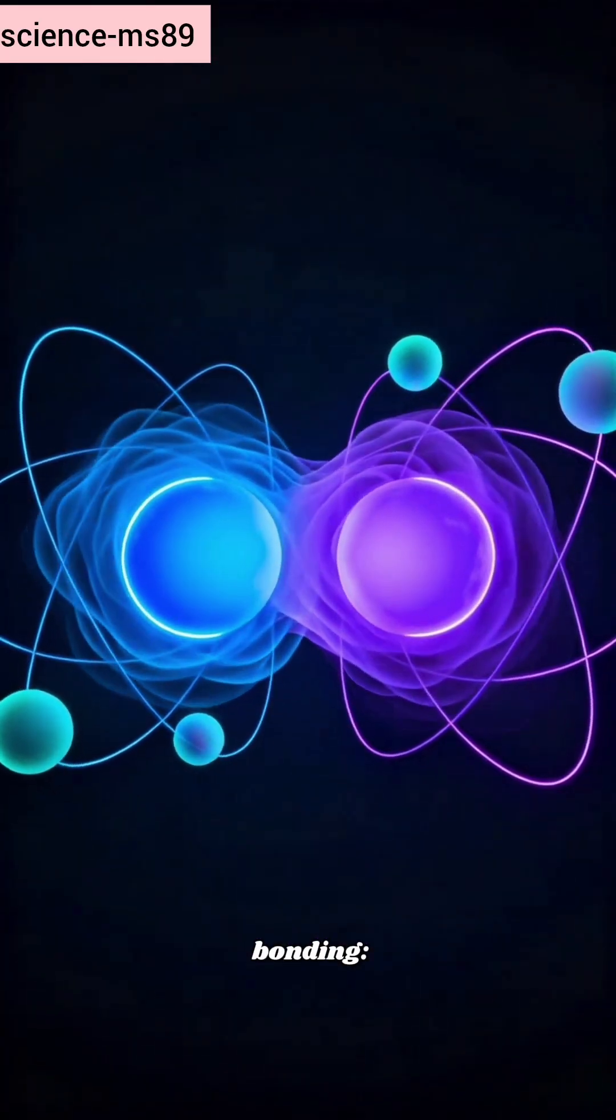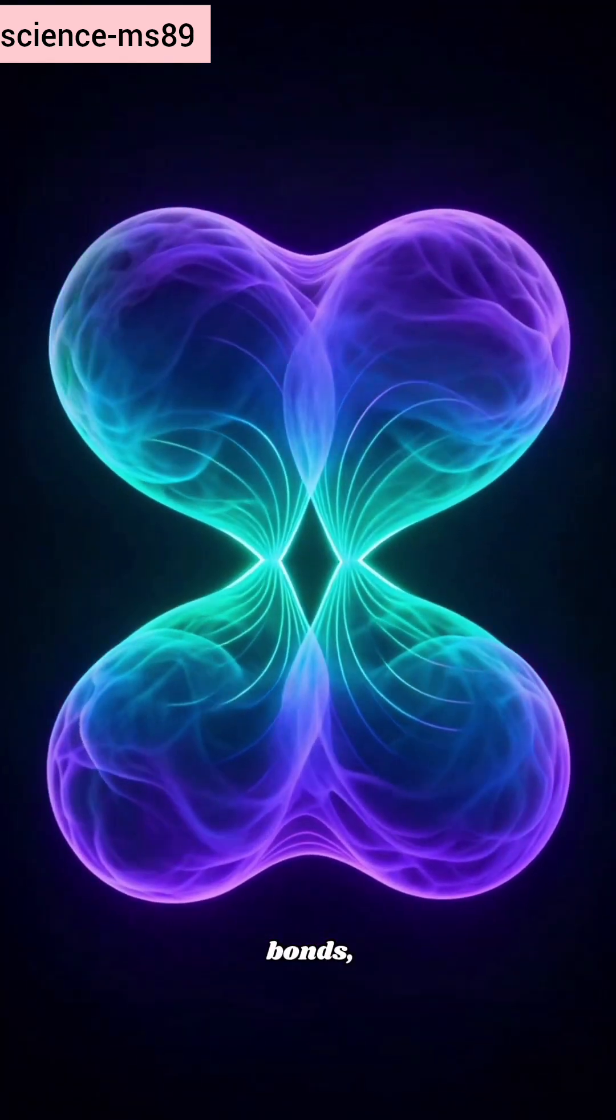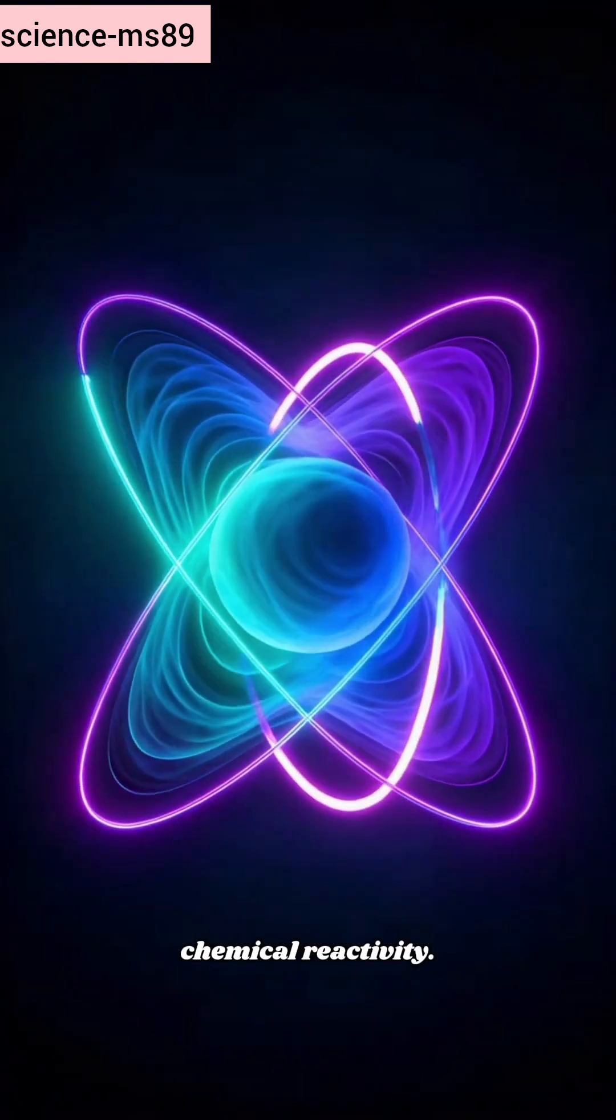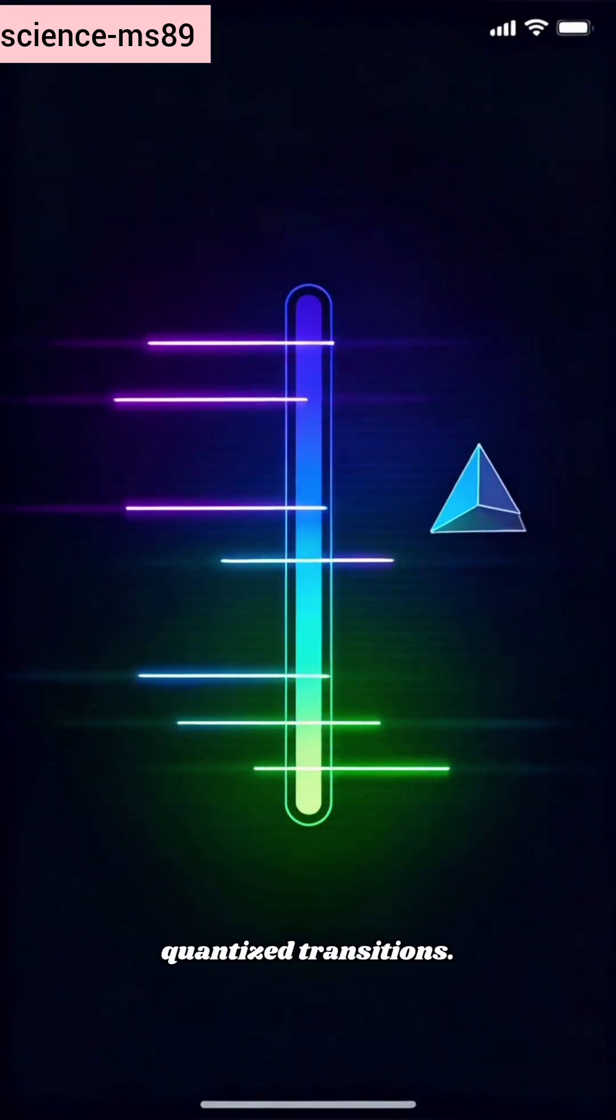This model explains bonding. Overlapping orbitals create sigma and pi bonds, driving molecular shape and chemical reactivity. Spectral lines arise from quantized transitions.